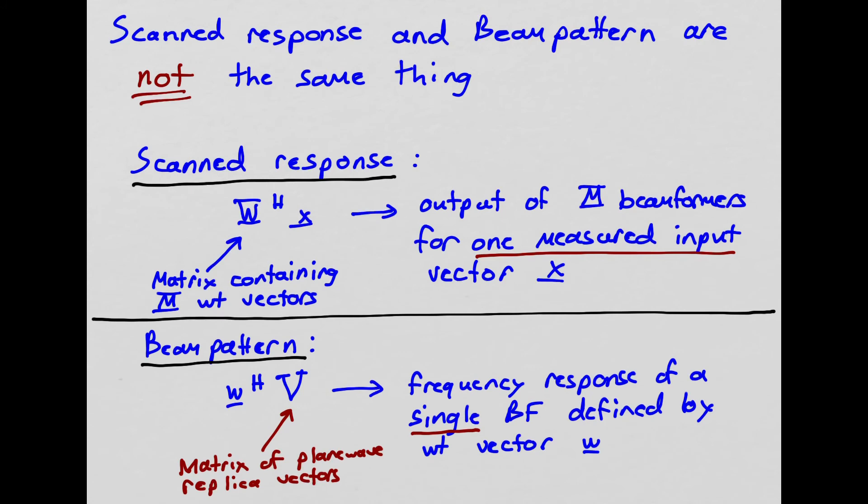I want to emphasize one thing here. The scanned response and the beam pattern are not the same thing. The scanned response is the output of m different beamformers for a single measured input vector X. So somebody gives me a measured input vector X, and I calculate the scanned response across a bunch of different directions, a bunch of different angles, using this matrix multiply W Hermitian X. So I have a matrix containing m different weight vectors, and I process a single input vector X.